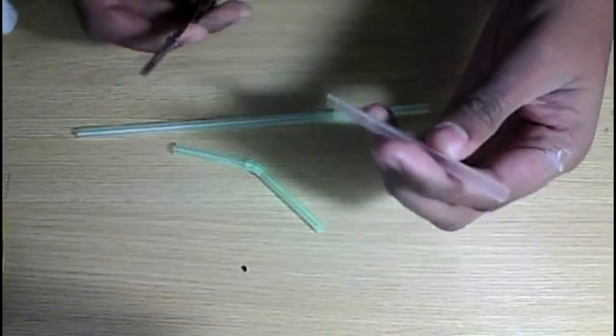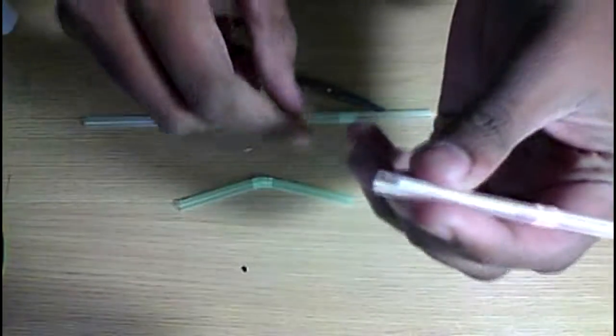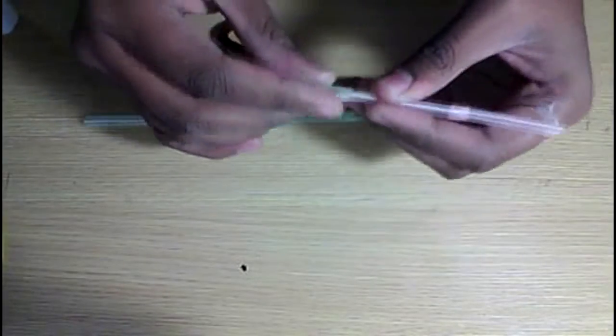Now cut these straws in a V shape at the edges and join them as shown in the video. You can use the super glue for extra firmness.